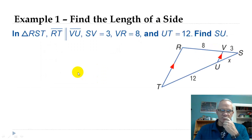All right, first example here. It says RT is parallel to VU, and it's marked here. SV is 3, that's marked. VR is 8, that's marked. UT is 12. We're trying to find SU, that's what they've got marked as X. So the way we would have had to have done it before, here's the old way.